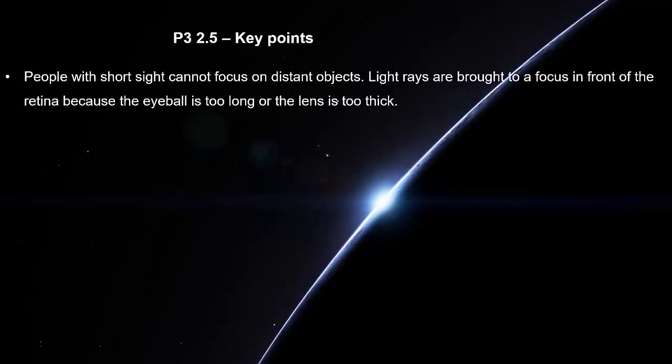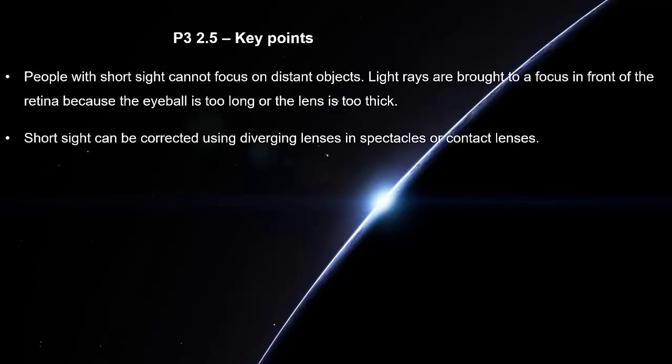People with short sight cannot focus on distant objects. Light rays are brought to a focus in front of the retina because the eyeball is too long or the lens is too thick. Short sight can be corrected using diverging lenses in spectacles or contact lenses.